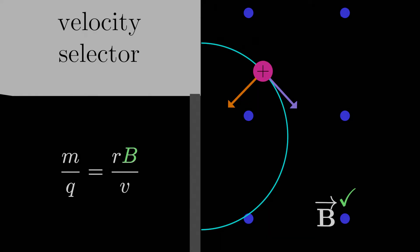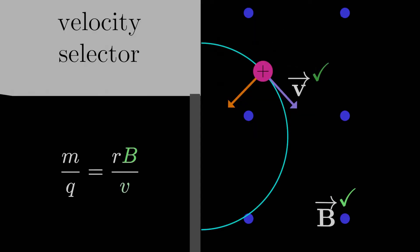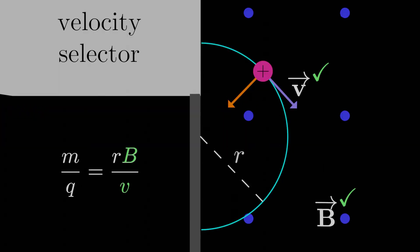Well, we know the B field strength, that might just be like a dial on a machine that we can tune. We also know the speed v, that was specifically what we selected for out of the velocity selector. What about r, the radius of the circle of motion?